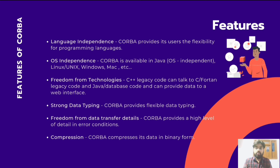Then comes freedom from technologies — C++ legacy code can talk to Java database code and provide data to a web interface. Next is strong data typing, meaning we can apply or store different types of data types with no restriction on the use of data types. CORBA also supports freedom from data transfer details as it provides a high level of detail in error conditions. CORBA compresses its data in binary form, which means it saves memory — so in this way CORBA is efficient.